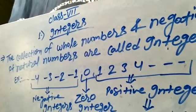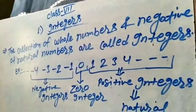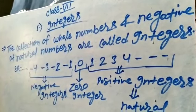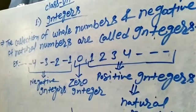The collection of whole numbers, negative of natural numbers are called integers. In this example, let's see.